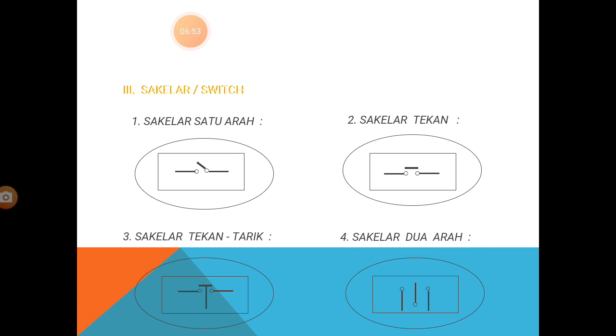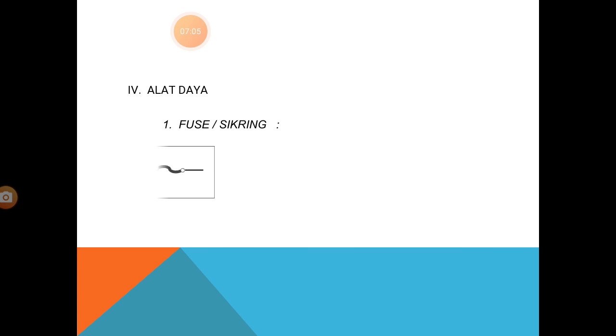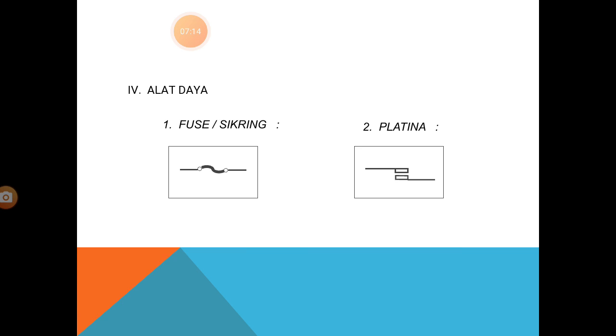Selanjutnya, saklar dua arah — saklar seperti tombol untuk lampu sein, kanan dan kiri. Selanjutnya, alat daya. Ini simbol seek ring. Yang kedua, platina — platina untuk di pengapian.